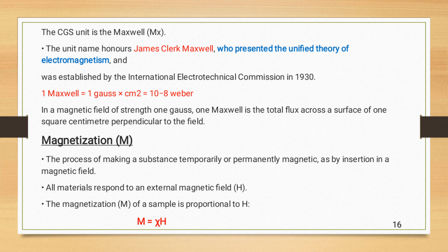In the magnetic field of strength 1 Gauss, 1 Maxwell is the total flux across the surface of 1 square centimeter perpendicular to the field.